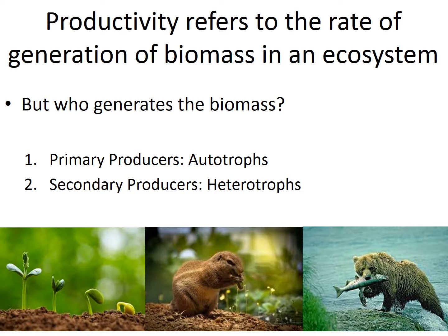Before understanding what primary and secondary productivity is, one must first understand what productivity is. This refers to the rate of generation of biomass in an ecosystem. There are two different components: primary producers, which are autotrophs, and secondary producers, which are heterotrophs.